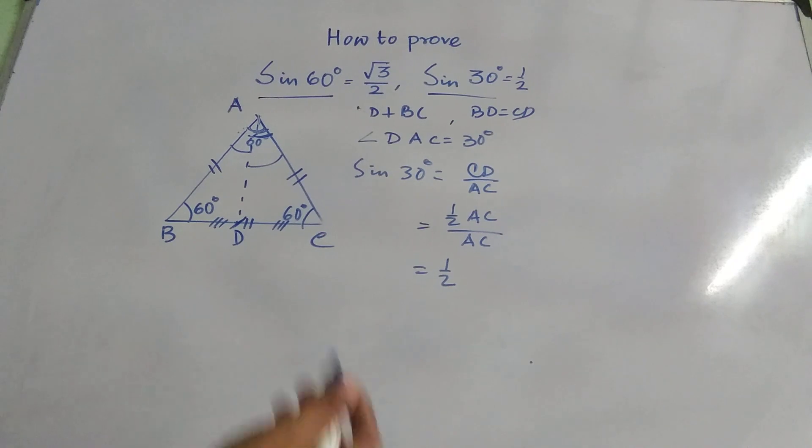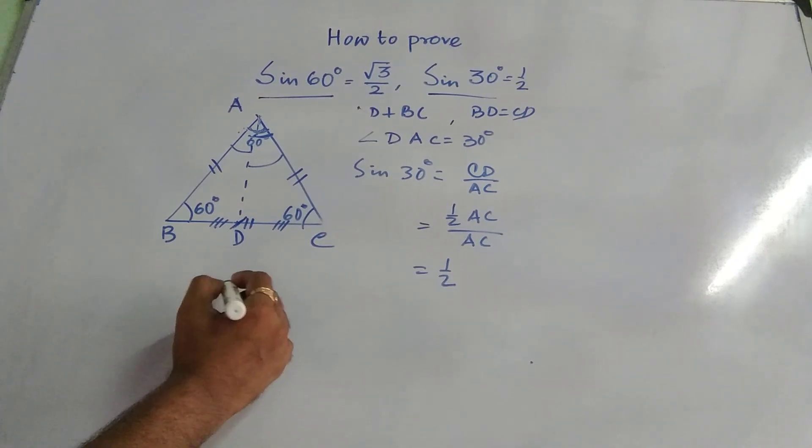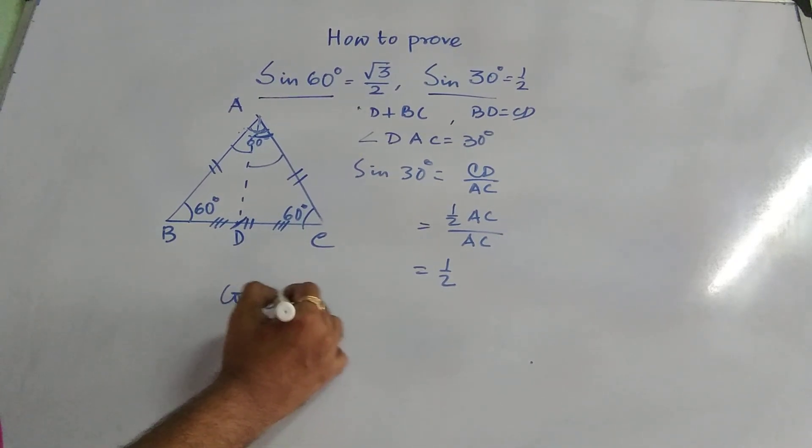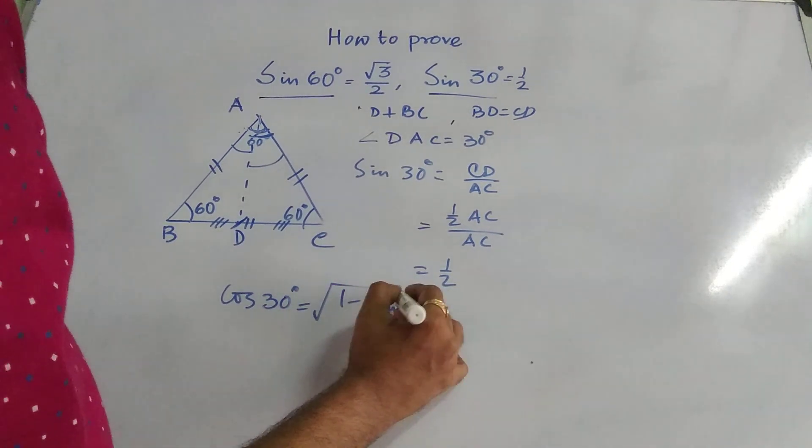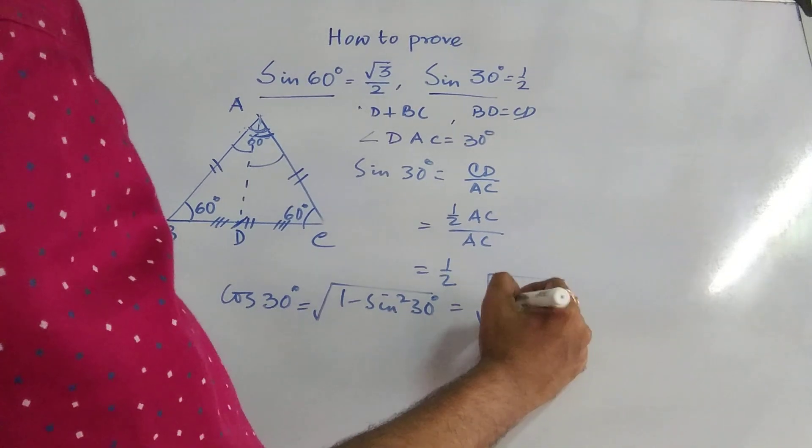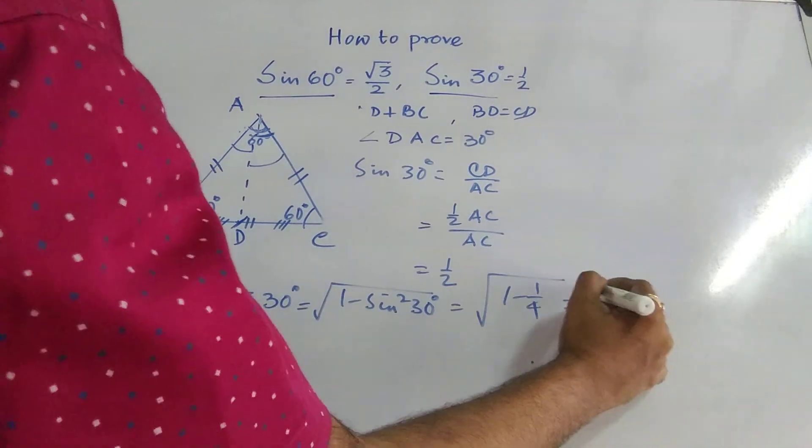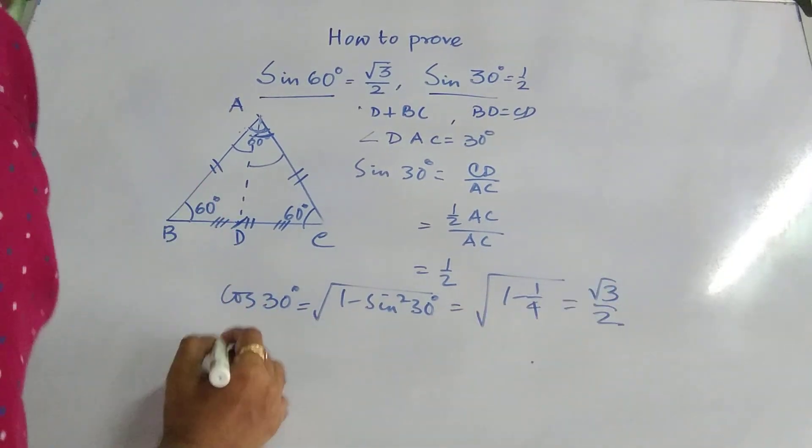So obviously, if we want to find out the cos of 60 degree and cos of 30 degree, so it will be just square root of 1 minus sin square 30 degree. So it is nothing but square root of 1 minus 1 by 4, that is 3 by 4, it is root 3 by 2.